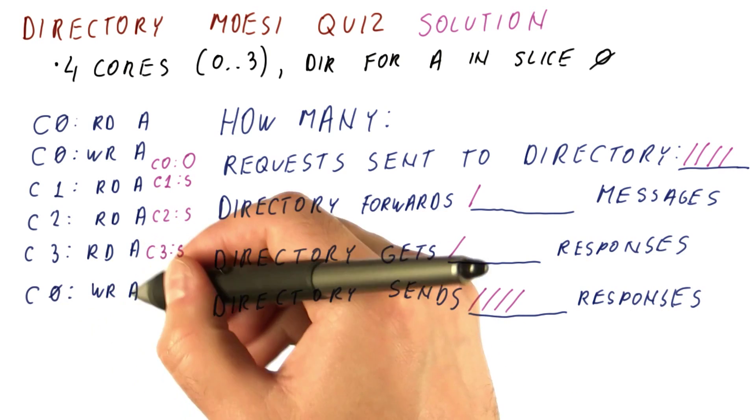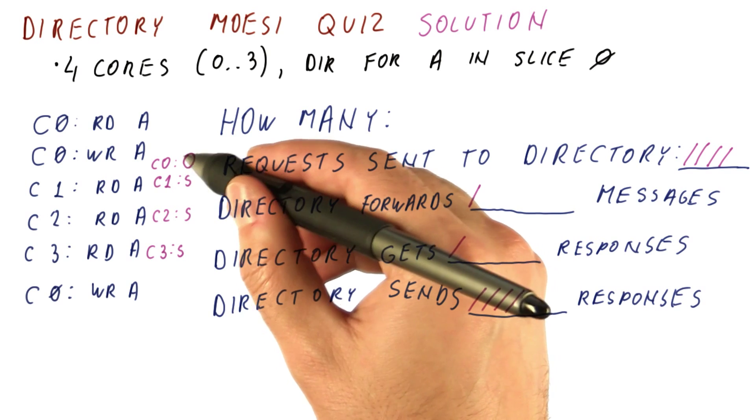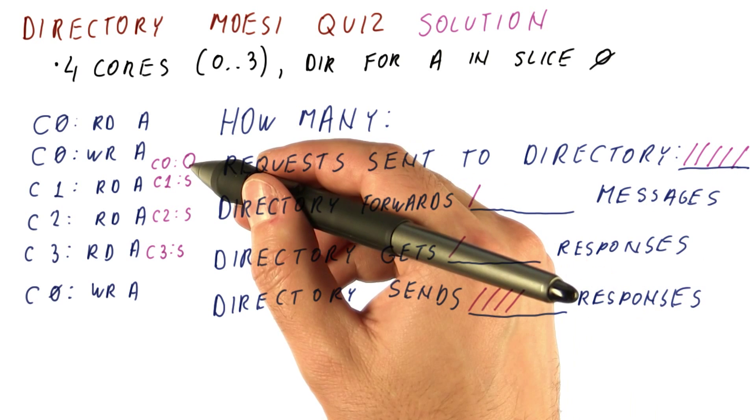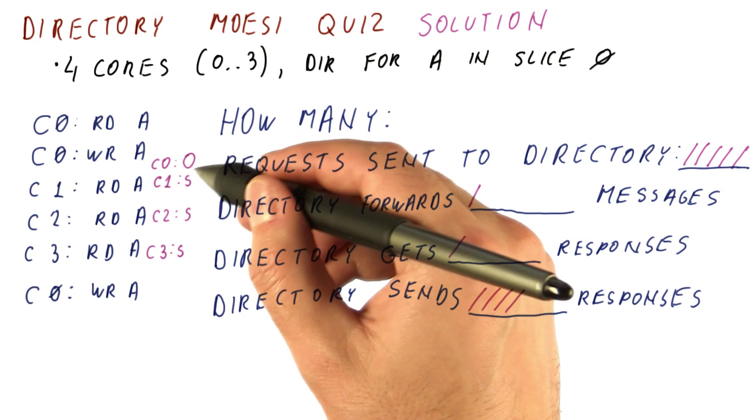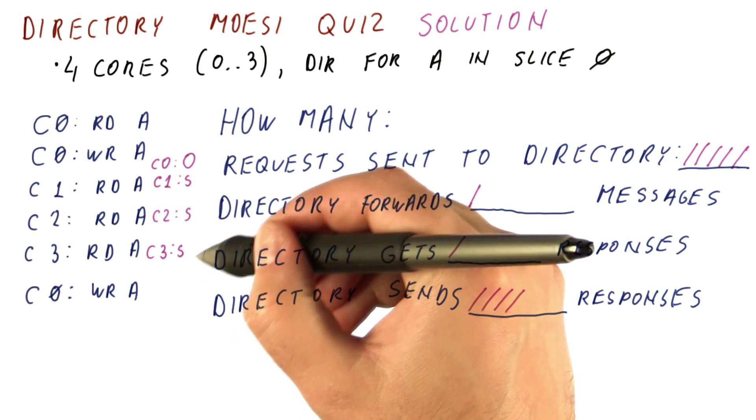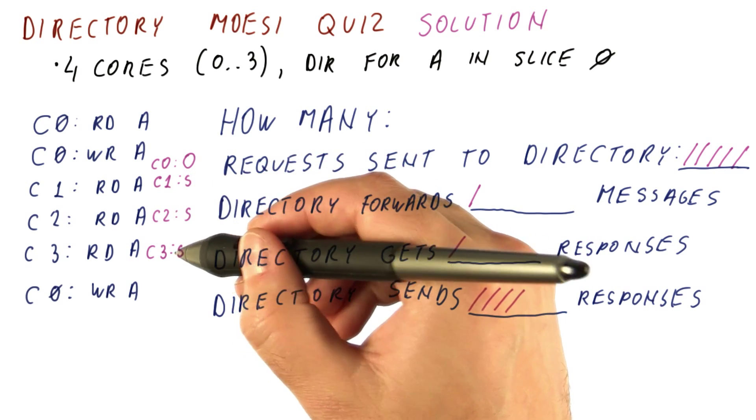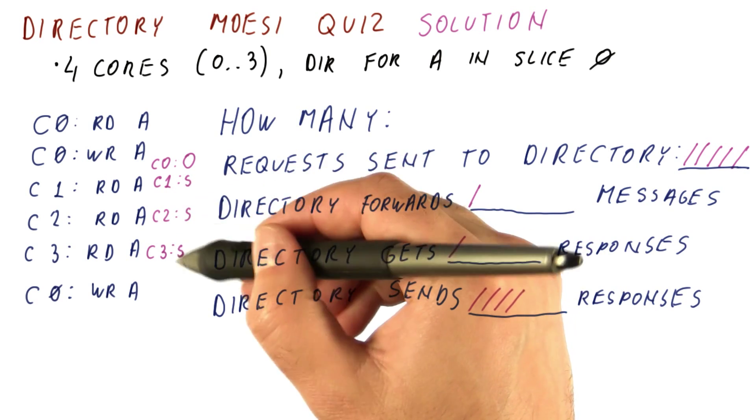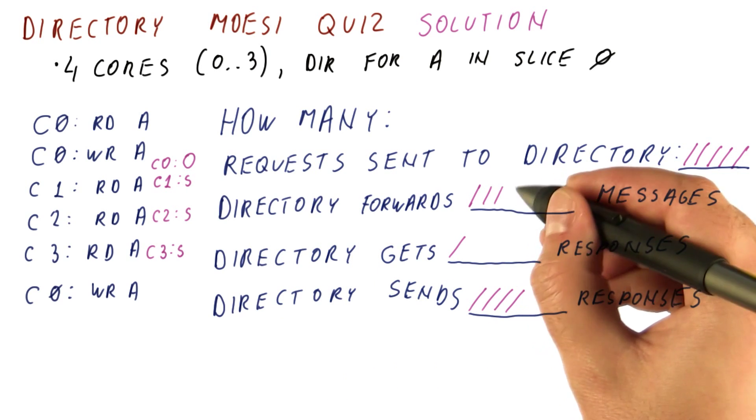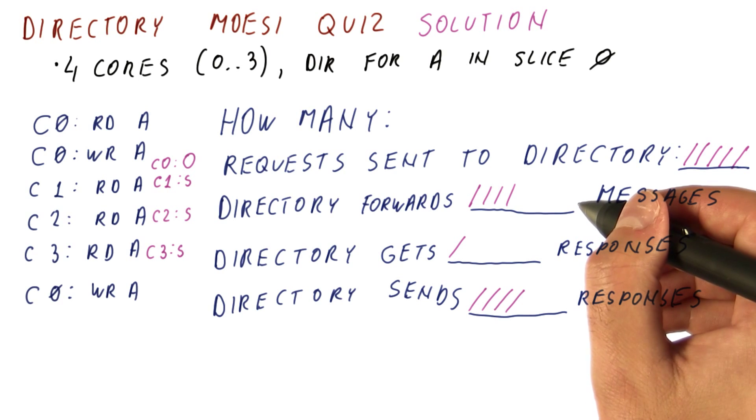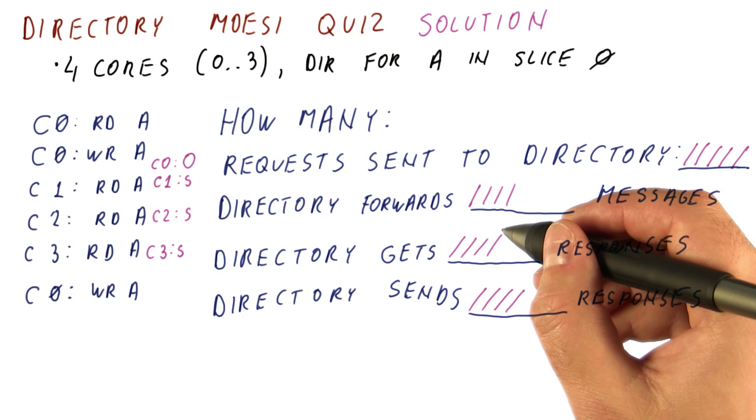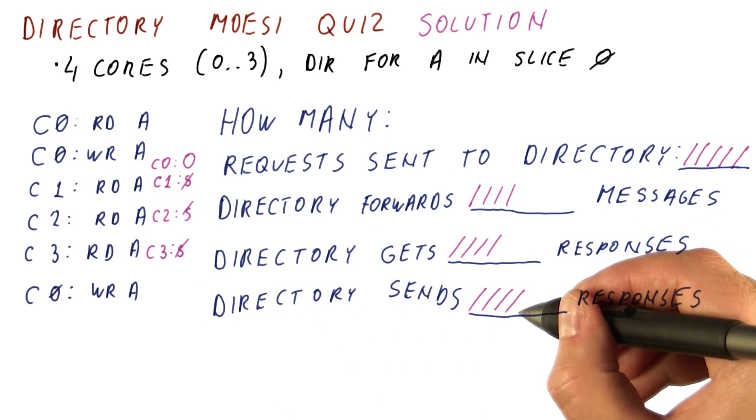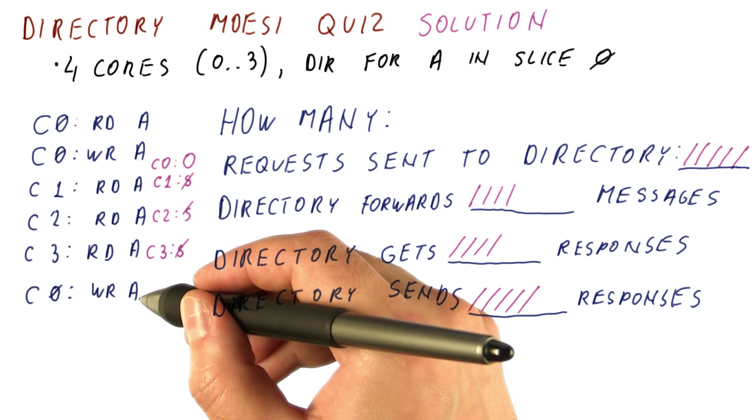And now core 0 writes. Because it's in the owned state, it is not able to write without notifying the directory, so it notifies the directory. This write is an invalidation request because we have the data but we need to send invalidations to these three processors. So the directory knows that cores 1, 2, and 3, their caches have the block. So it sends three messages to these three destinations. It gets three responses from each of them. Once they have all acknowledged that they have invalidated, it sends a response back to core 0, and now it's able to write.